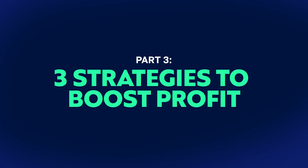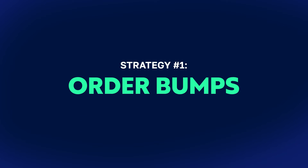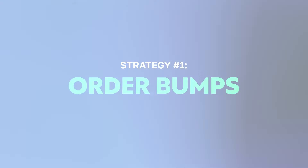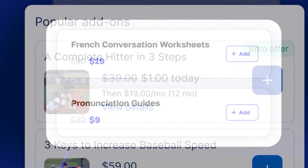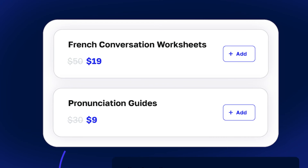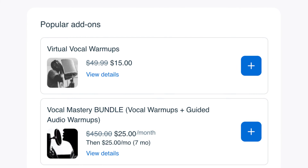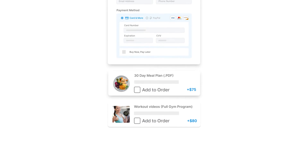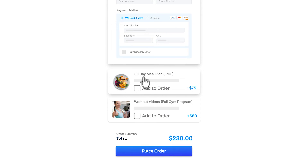Part three: three surprising ways to boost profits as a course creator. These are three strategies you can use with SamCart's Checkout OS to give your students opportunities to buy more of your amazing products. Strategy number one is using order bumps. Order bumps let your customers go on a shopping spree — adding a bonus course or access to your private community as an order bump has done huge numbers in sales for SamCart course creators.